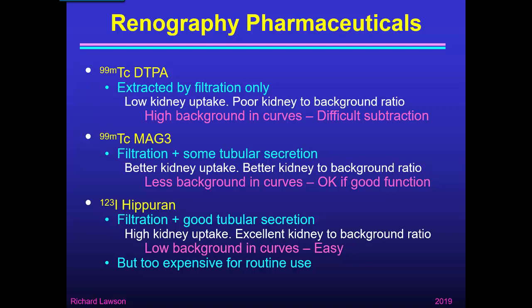Iodine-123 labelled Hippuran is much better because it has very good tubular secretion, giving high kidney uptake, very little in the blood, and an excellent kidney-to-background ratio. The background in the curves is very low, making background subtraction very easy. Unfortunately, iodine-123 Hippuran is too expensive for routine use, so for normal renography we must choose between Technetium-99m DTPA and Technetium-99m MAG3.